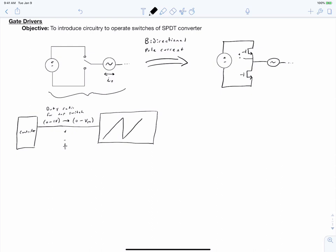The comparator is going to compare our analog duty ratio against a carrier. In this case, I'm sketching our carrier as a sawtooth waveform, and I'll sketch the duty ratio in blue.